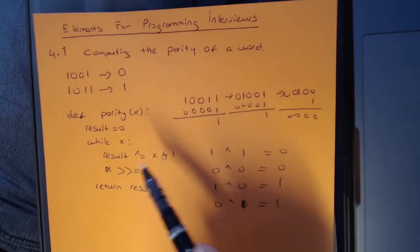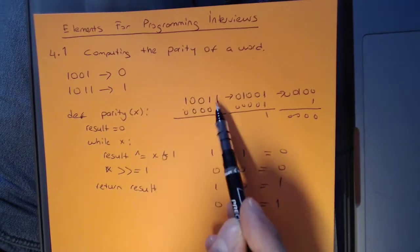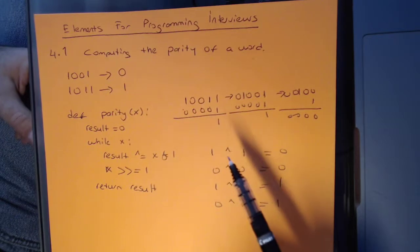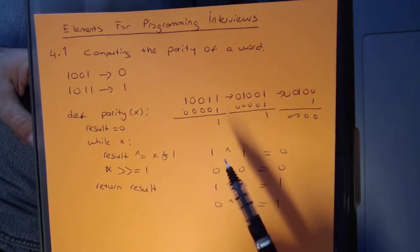So you see how this operation is working. In this particular example, we had 3 set bits. So this will return parity of 1. I hope this makes sense.